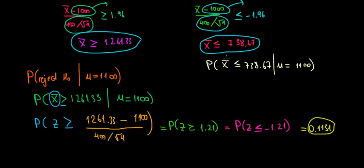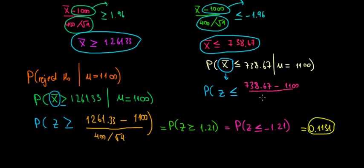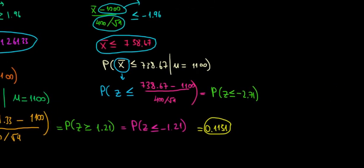Again, we're dealing with probabilities, so we standardize this sample mean into a Z score. We want to know by how many standard errors this sample mean differs from the true population mean of 1100. We divide by the standard error, which is 400 over the square root of 9. Solving the math, we get the probability that Z is less than or equal to minus 2.71.